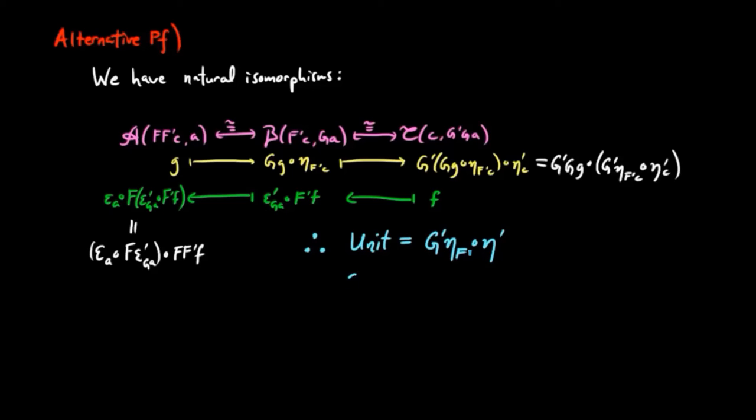Similarly, going from right to left, it acts by post-composition by epsilon F epsilon prime G. So this must be the counit. And so we have an adjoint situation with unit and counit as defined in the statement above. And that completes the proof.